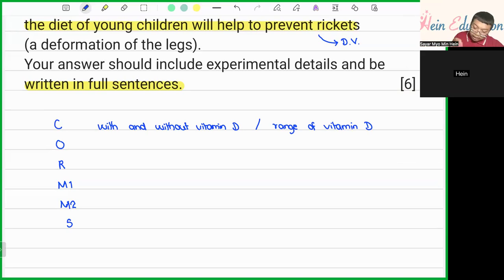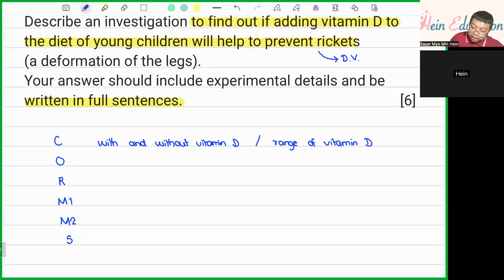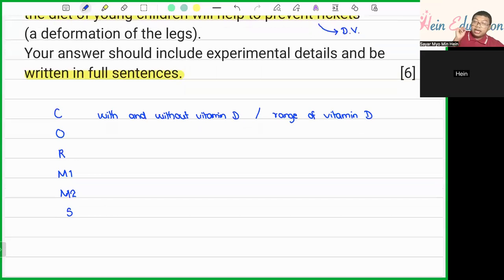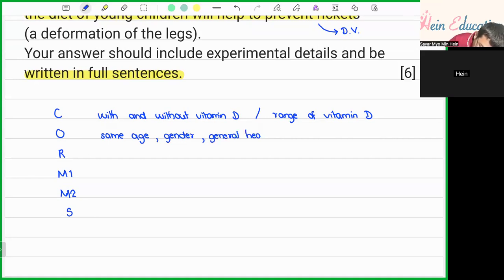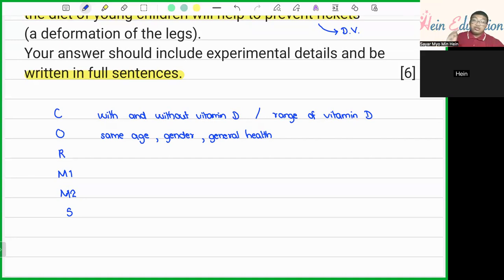For O — Organism — in this case we are using young children. All the young children participating in the experiment should be of the same age, same gender, and same general health. As additional information, since vitamin D can also come from sunlight, we should ensure that all the children have the same exposure to sunlight. This is additional knowledge we can apply to strengthen the experimental design.